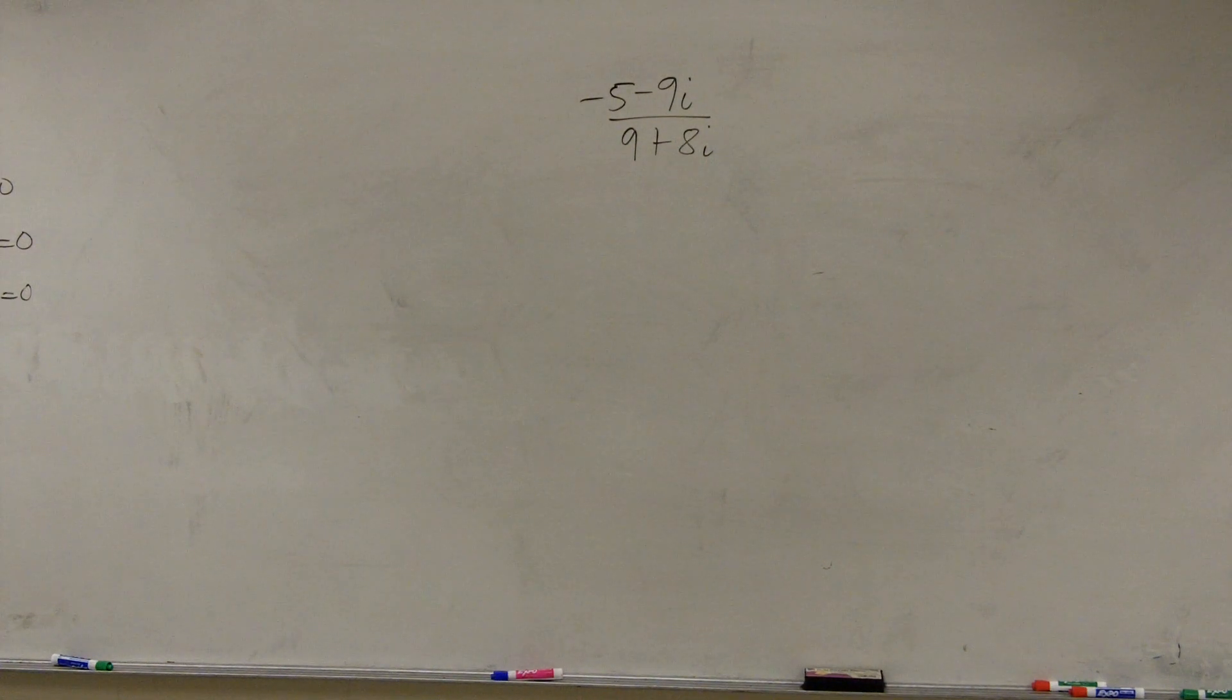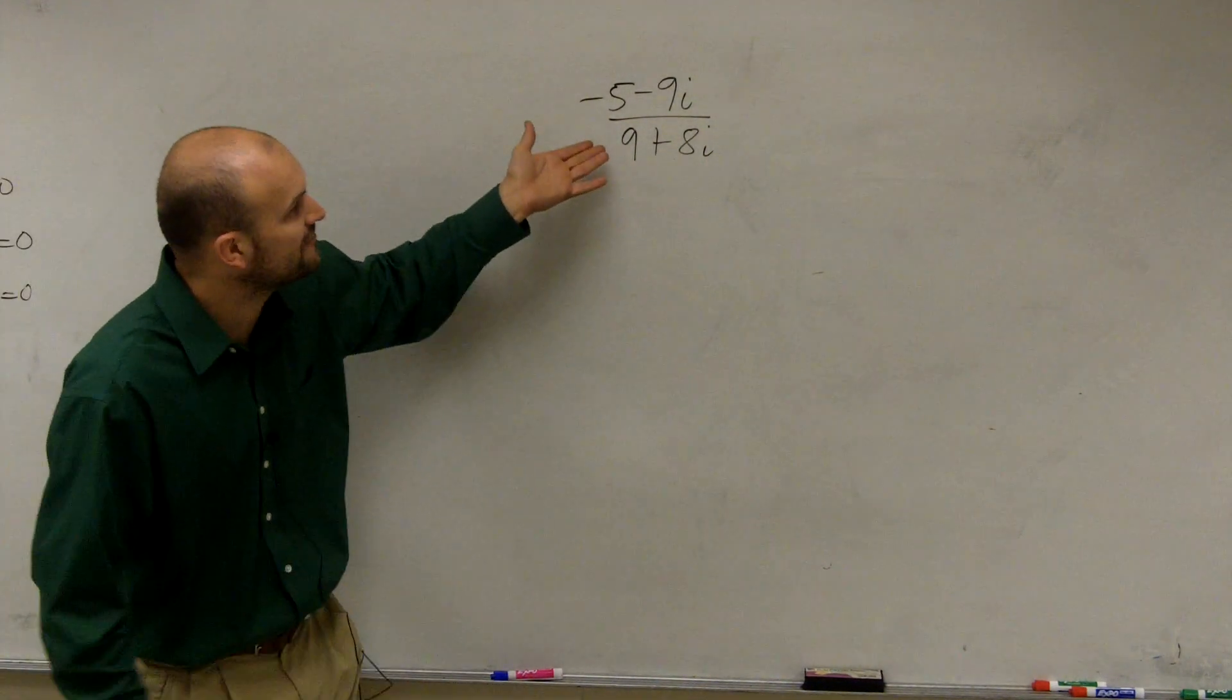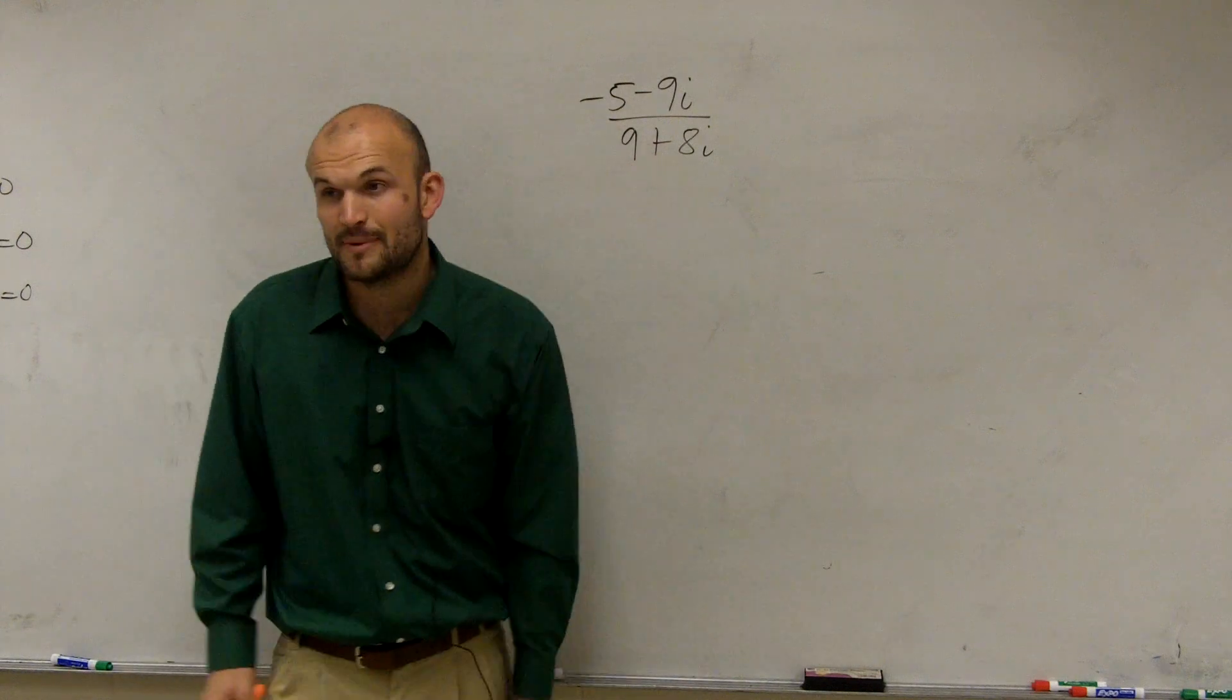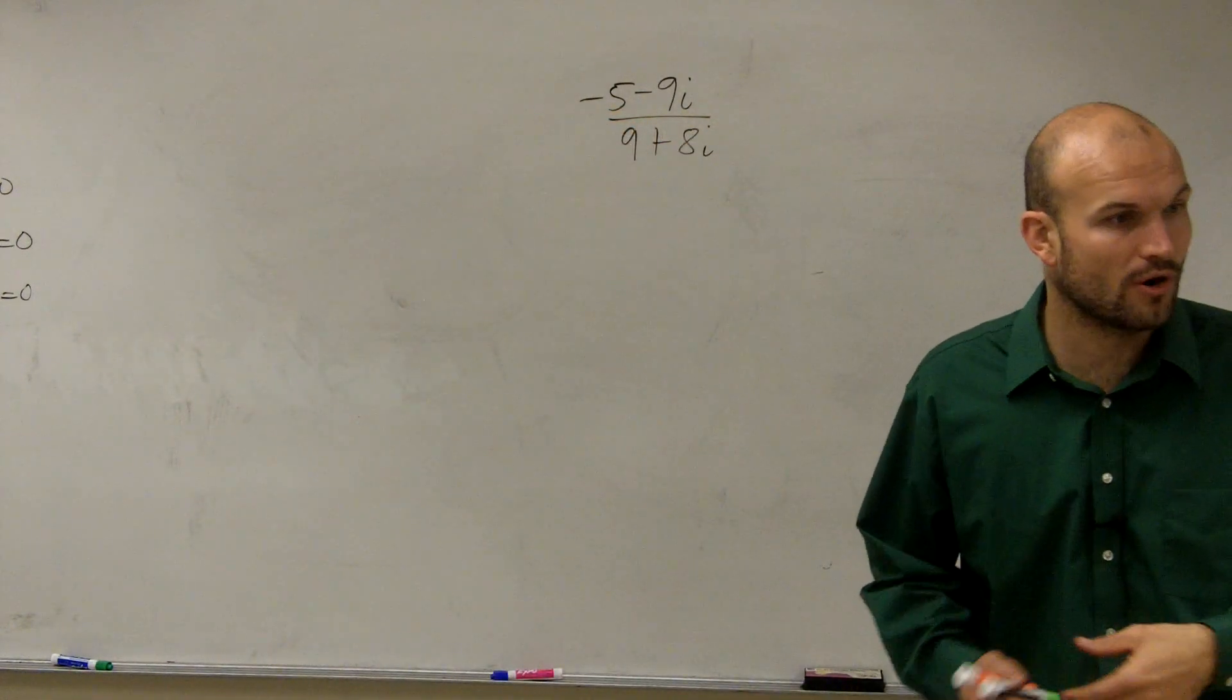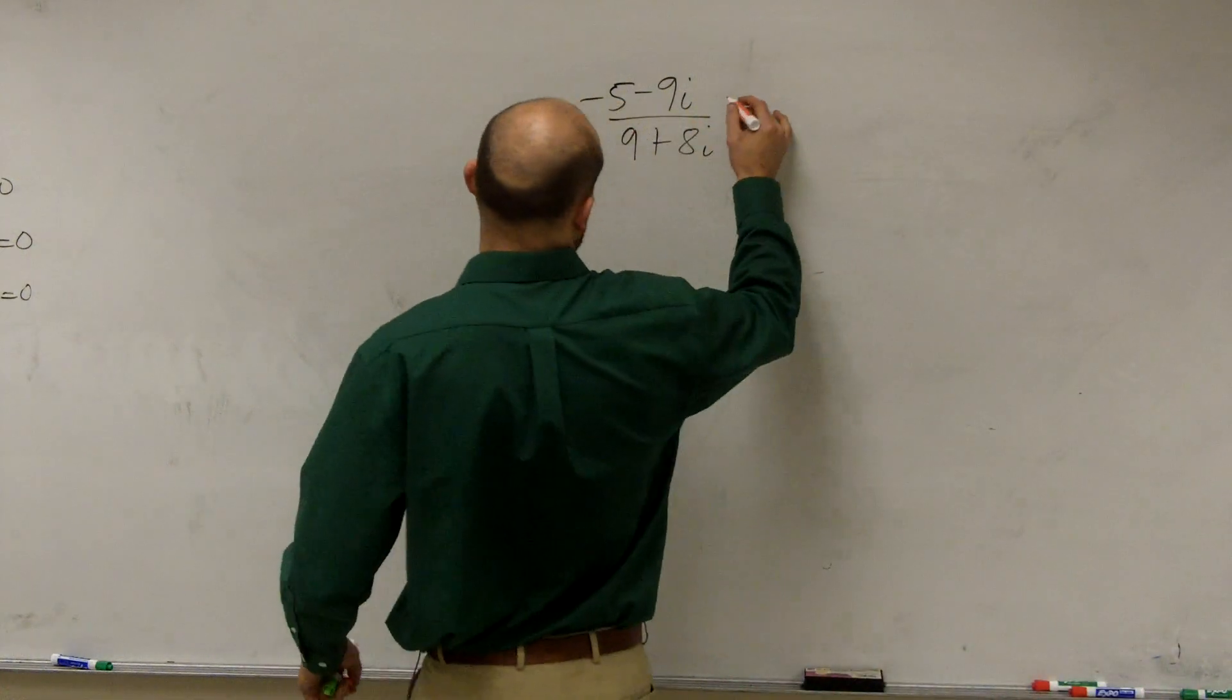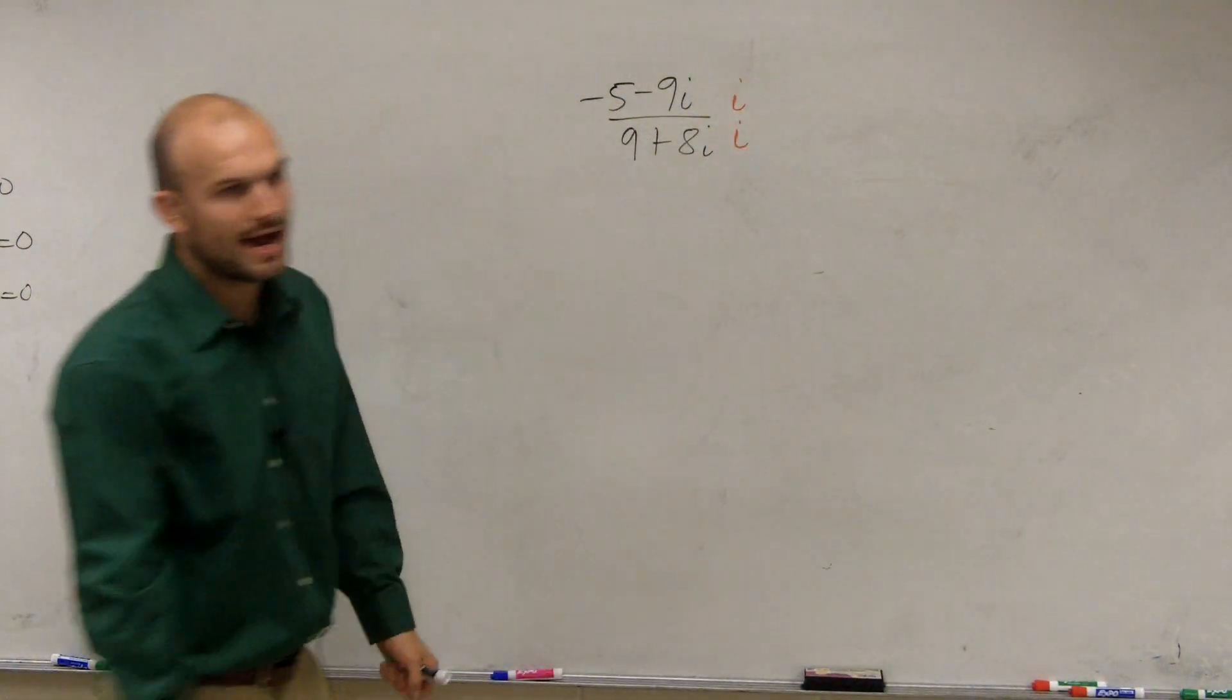So let's go and take a look at this one. If I have negative 5 minus 9i divided by 9 plus 8i. Now, if I was going to follow the same process that I did before, my thinking would be multiply by i over i, right?